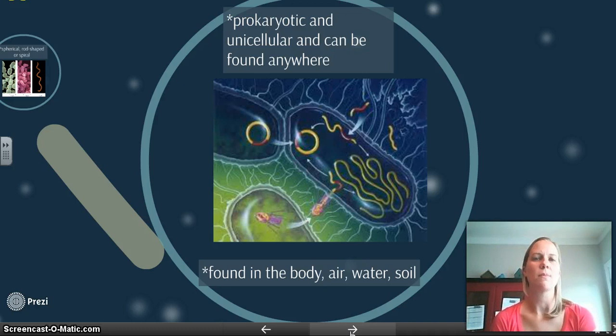So we know bacteria. We've talked about this in class. They're prokaryotic, which means those simple organisms that we talked about compared to eukaryotic, which are the complex. We can see prokaryotic - there's no nucleus, the DNA is free floating. These are single celled organisms, unicellular, and they're found everywhere. You're going to find bacteria in your body, on your skin, in the air, in the water, in the soil. You're kind of surrounded by it.